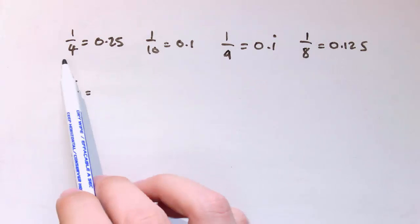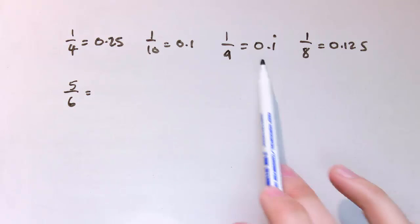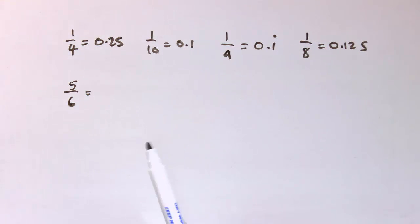In this video we're going to look at converting fractions to decimals, including some with recurring decimals. For some of them you probably just know what the answers are anyway. Say one quarter, you just know it's 0.25, a tenth is 0.1. That depends on how many of these you've learnt. You might even know things like one ninth is 0.1 recurring or one eighth is 0.125.